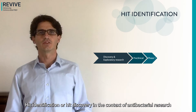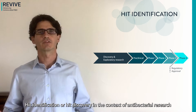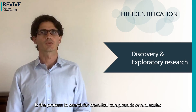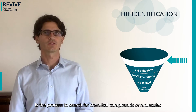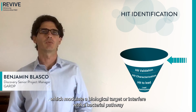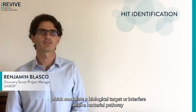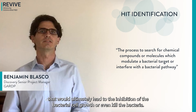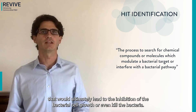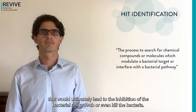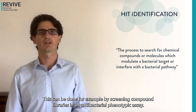Hit identification, or hit discovery, in the context of antibacterial research is the process of searching for chemical compounds or molecules which modulate a biological target or interfere with a bacterial pathway that would ultimately lead to the inhibition of bacterial cell growth or even kill the bacteria. This can be done, for example, by screening compound libraries in an antibacterial phenotypic assay.